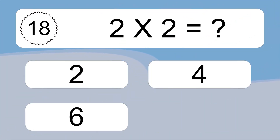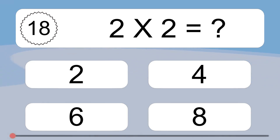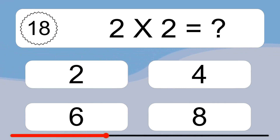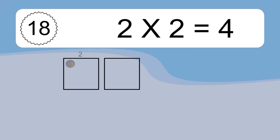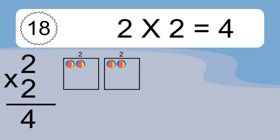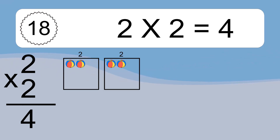Two times two equals what? Two times two equals four. We have two boxes, and each box has two colorful balls inside. If you count all the balls in all the boxes together, you will have two times two balls. This equals four balls.